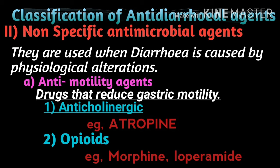Anti-motility agents are drugs which reduce gastric motility — that is, they reduce the excess peristalsis movement in the GI tract. Among anti-motility agents, the first subclass is anticholinergics. The concept of anticholinergic is atropine — atropine acts as an anti-secretory and antispasmodic agent, thereby reducing diarrhea. The second subclass is opioids — for example, morphine and loperamide.